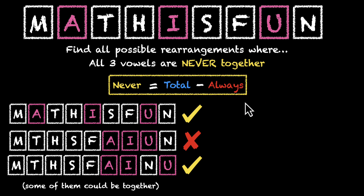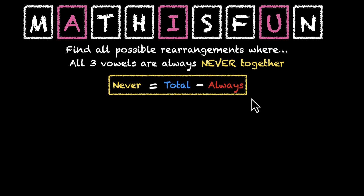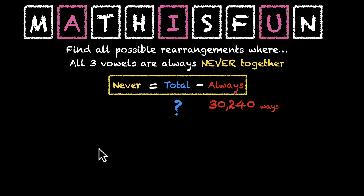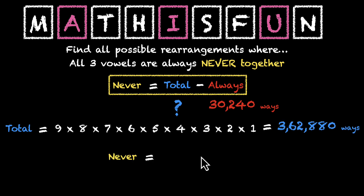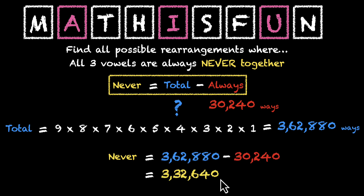And good thing for us is we have already solved half of it — we already know that there are 30,240 ways to arrange these letters such that A, I, and U are always together. What's the total number of ways? All the letters M, A, T, H, I, S, F, U, N are distinct — that's 9 letters. So the total number of ways is 9×8×7×6×5×4×3×2×1, which is roughly 3.5 lakh (362,880). To get the answer, all we need to do is take the total and subtract the cases where the vowels are always together. That's our answer — 362,880 minus 30,240. And just a fun fact, that's more than 90% of the total number of cases.